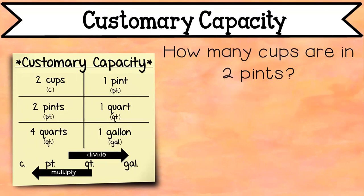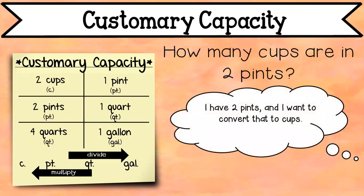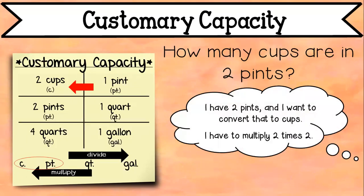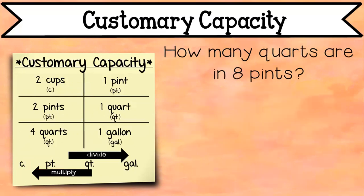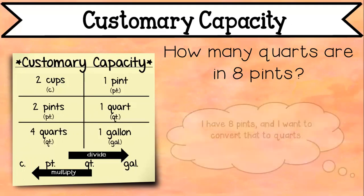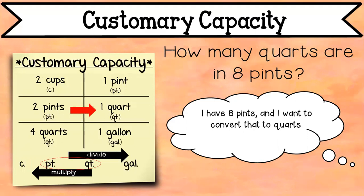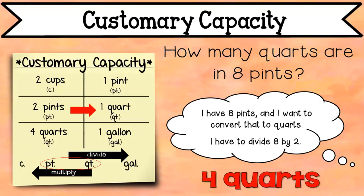Here's the first question: how many cups are in two pints? You have two pints that you want to convert to cups, so you multiply two times two, which gives you four cups. Next question: how many quarts are in eight pints? I have eight pints and I want to convert to quarts — pints to quarts means we divide. Eight divided by two equals four quarts.